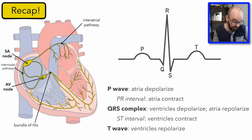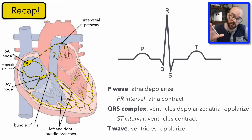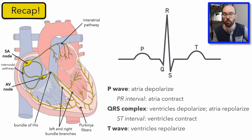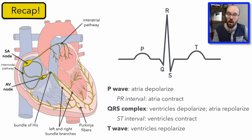The bundle of His separates into the left and right bundle branches, which transmit the signal very quickly because we want the ventricles to contract as one contractile unit as quickly as possible. The signal passes down the septum and on the way back up travels through the Purkinje fibers, distributing the signal throughout the heart muscle so the ventricles contract from the apex upward.